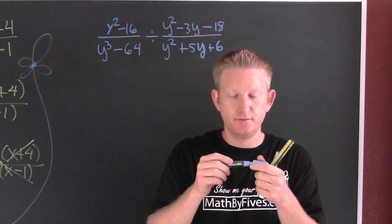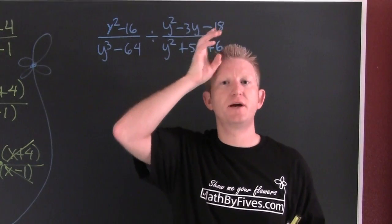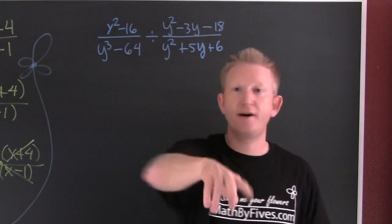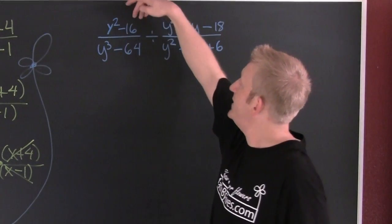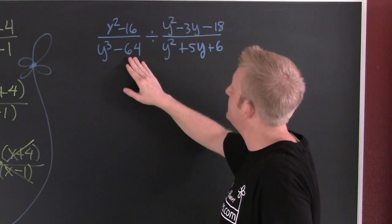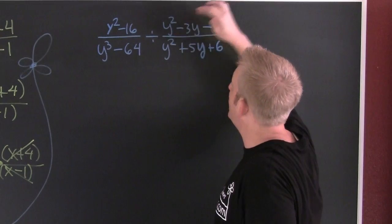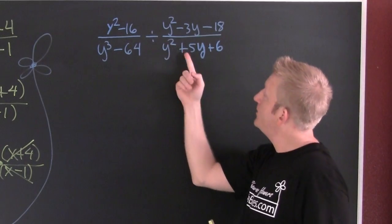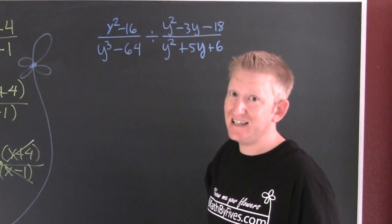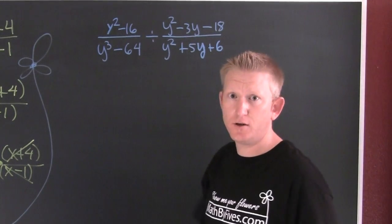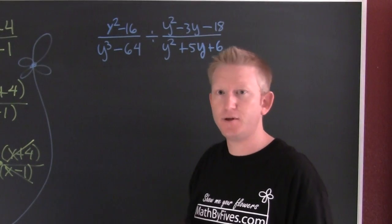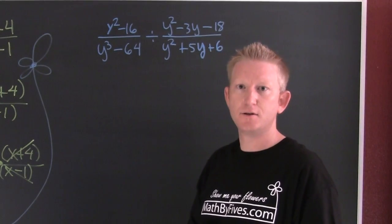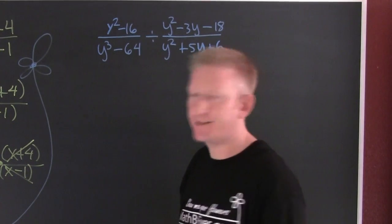So when we're dividing rational expressions, remember: factor, flip, and fight. Factor, flip, and fight. Here I see I have y squared minus 16, divided by y cubed minus 64, divided by y squared minus 3y minus 18, divided by y squared plus 5y plus 6. There's a whole lot going on. So I'm going to go through and factor, then flip, then fight. When I say flip, dividing by a fraction is the same as multiplying by the reciprocal.